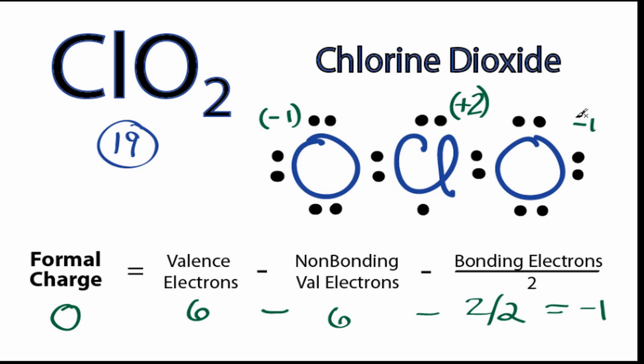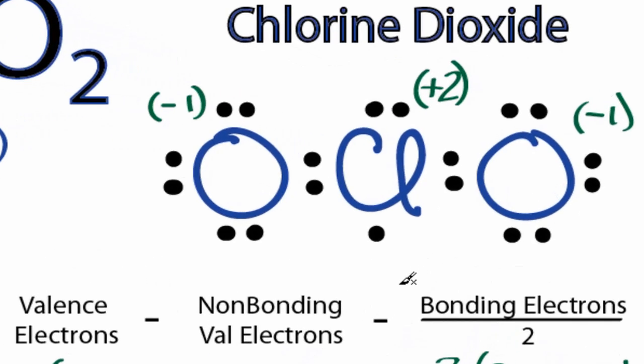This oxygen over here will be negative 1 as well. So, our total charge is zero, but we have this plus 2 on the chlorine and these negative ones. With formal charges, we want them to be as close to zero as possible. That will give us the most likely Lewis structure for ClO2. So, let's see what we can do.